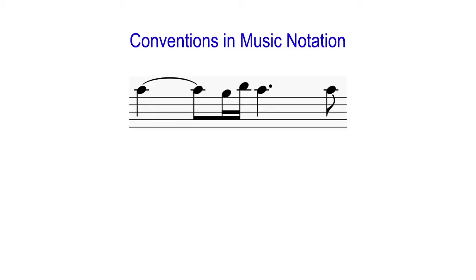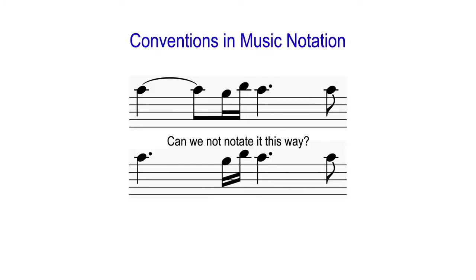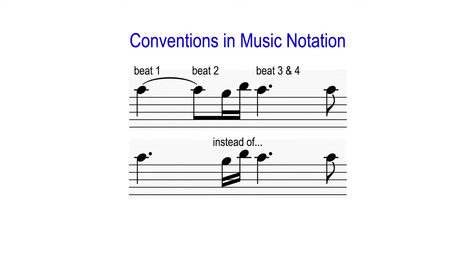There are certain conventions for notating music we see all the time. Not everybody who can read music would think about why in some cases we would break a long note into two shorter notes and put in a tie to connect them. Looking at the example here, it would seem easier to notate the two notes as one long note. The reason for grouping and dividing notes is to make them easier to read — the long note that falls between beat 1 and beat 2 is split so that the second note starts on beat 2 for counting purposes.